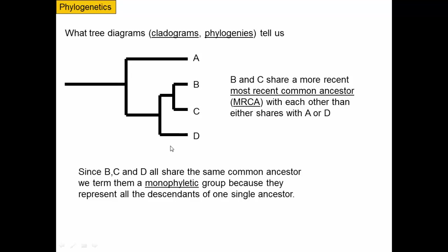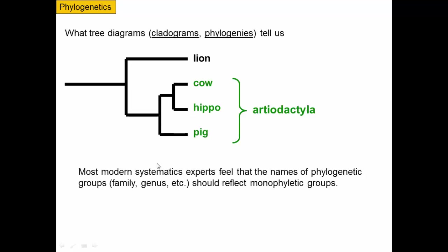When we look at this tree, B, C, and D all share the same common ancestor. Because of this, we often term this set of taxa a monophyletic group — they represent the ancestor and all the descendants of that ancestor. Collectively we call this entire group monophyletic, meaning 'from one phyletic group' or one history. Most modern systematics experts feel that the names of phylogenetic groups — family, genus, et cetera — should reflect monophyletic groups, so there should be a concordance between the way we name things and the evolution they underwent over time.